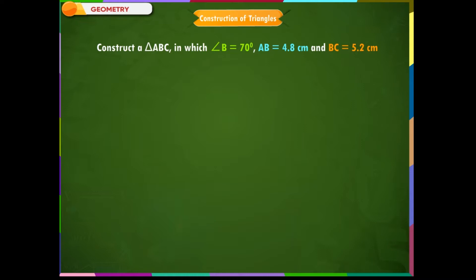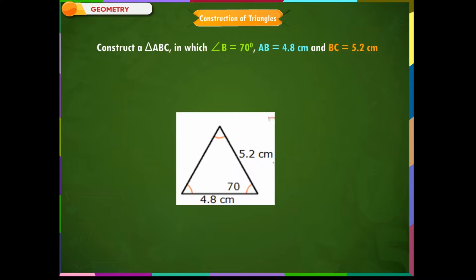Before doing construction, draw a rough sketch so that you will get an idea which side is taken as a base. Here, after drawing a rough sketch, we are sure that the base AB is equal to 4.8 cm.